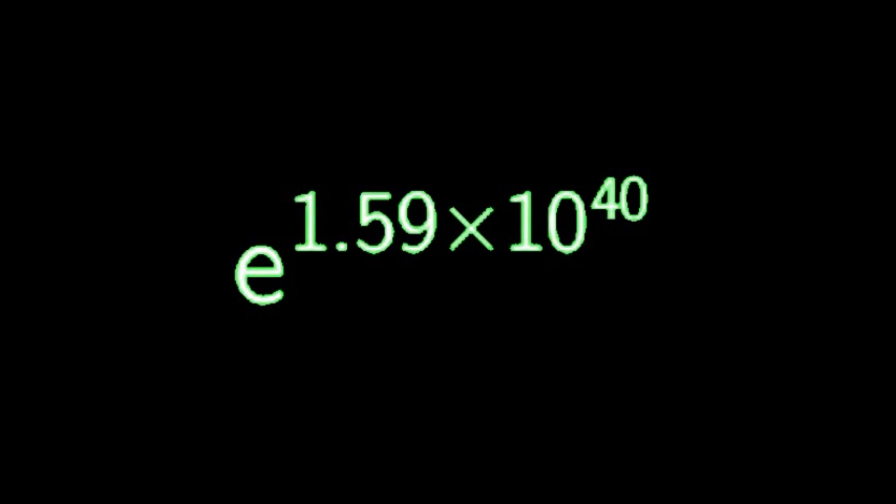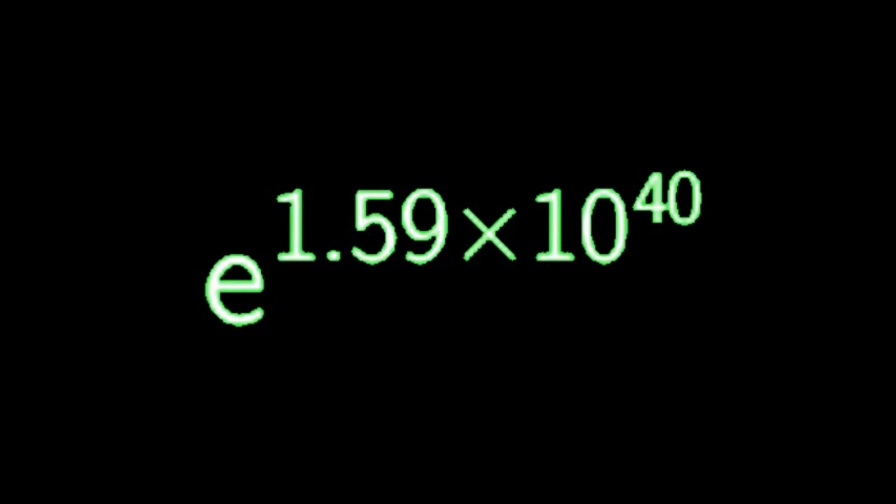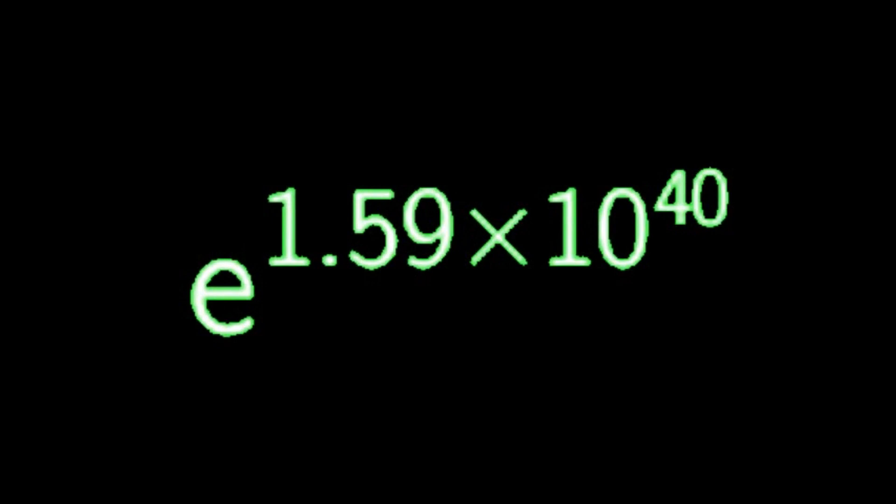For a long time, the Mertens conjecture was seen as a way to prove the Riemann hypothesis. Until the conjecture was disproved. And it was disproved by showing that there had to be some large number which escapes from n equals one-half.